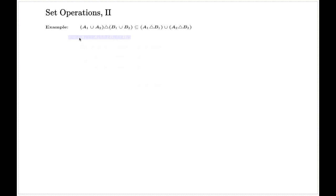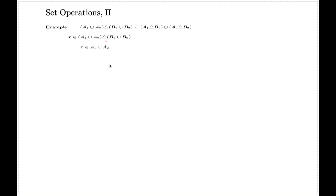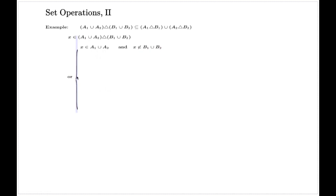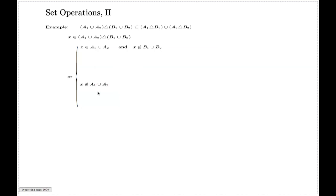The complete analysis goes like this: if I take an element from the left-hand side, I have to refer back to the definitions of the set operations. The symmetric set difference means that X belongs to the left component and doesn't belong to the right component — that's one possibility — or alternatively, X doesn't belong to this piece and at the same time belongs to the other one.